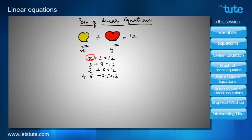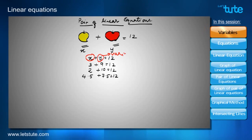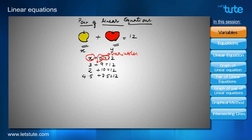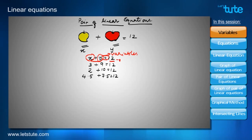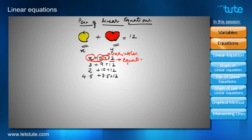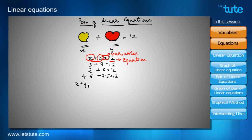Since the values of X and Y are varying, they are called variables. We can see the equals sign, which shows that the left-hand side and right-hand side values are equal — therefore this mathematical expression is called an equation. So we have the equation X plus Y equals to 12.